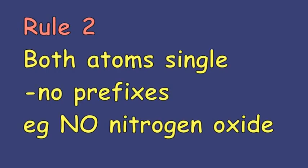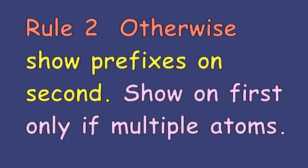Simple Rule 2: if both atoms are single, you can leave out the prefixes. Otherwise, use a prefix on the second element. You place a prefix on the first element if it is not a single atom.